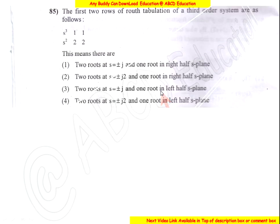Now question number 85. The first two rows of the Routh tabulation of a third-order system are given as shown.